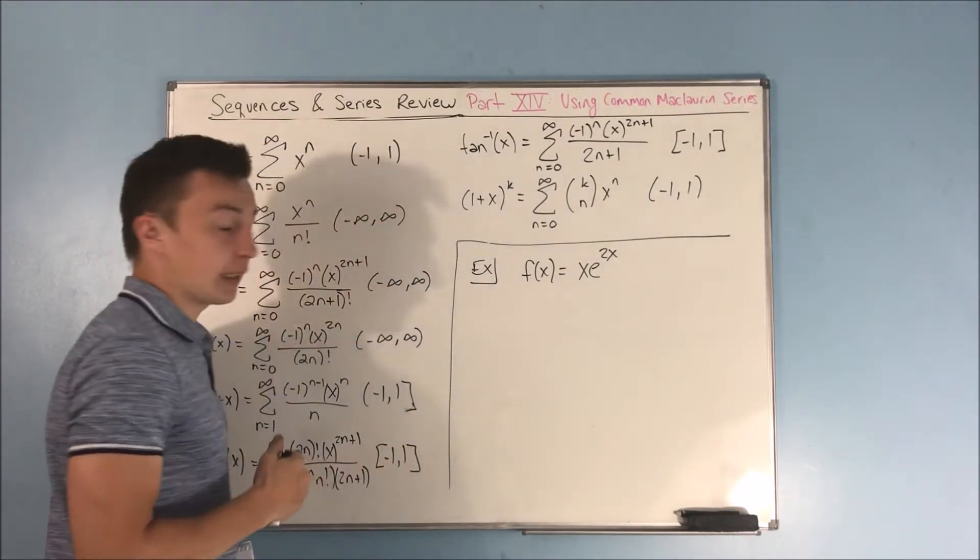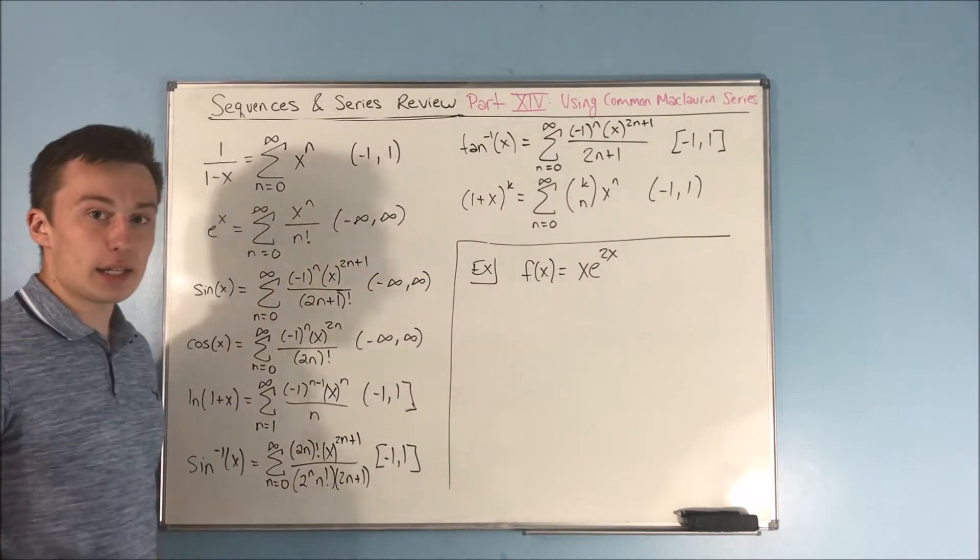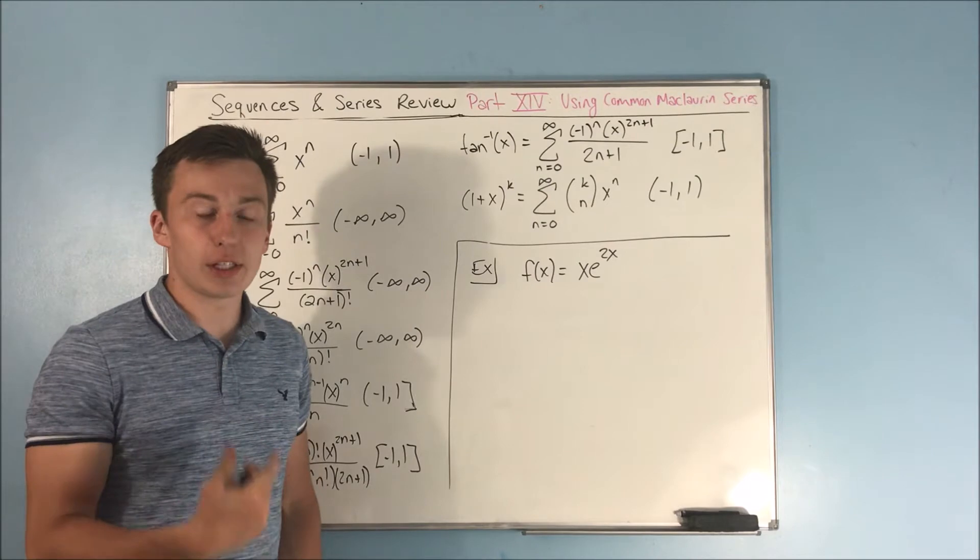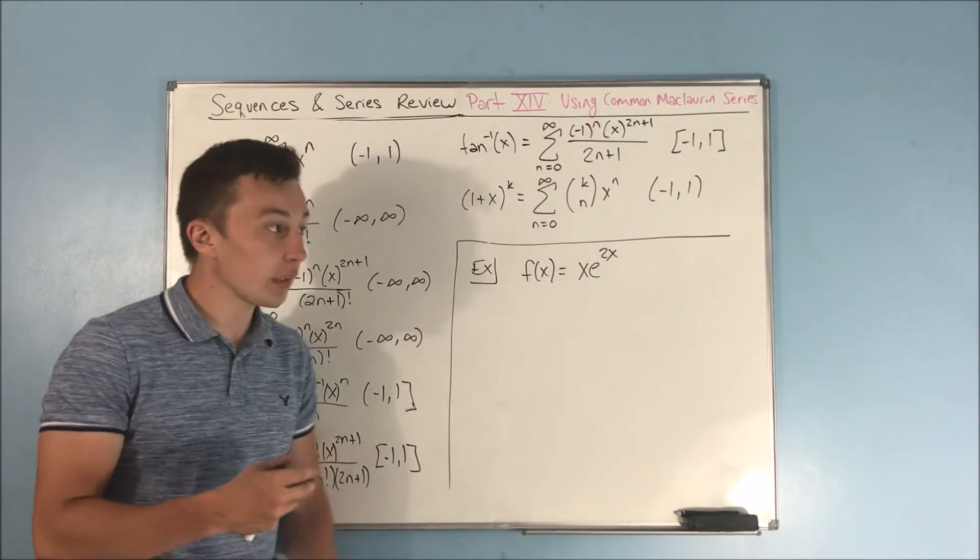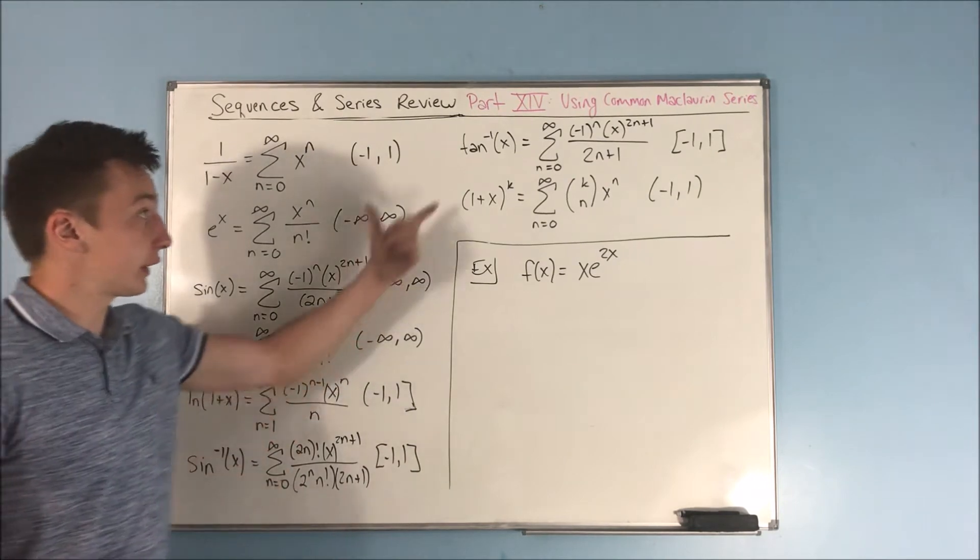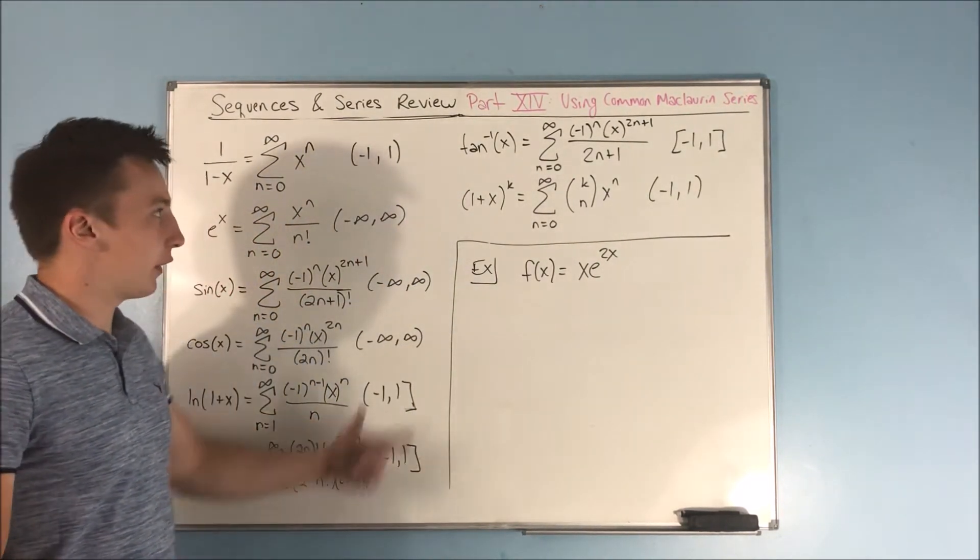for this function right here, this is x e to the 2x. If you forget the Maclaurin series for e to the x, it's not a big deal, you can do it from scratch. So you don't have to necessarily remember all of these. It'll be a nightmare to do something like arc sine or arc tangent, but